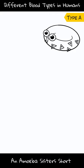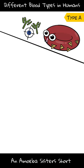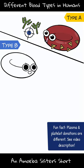Type A has A antigens on red blood cells. In the plasma, they have antibodies — proteins that are part of the immune system — that target the blood antigens they don't have. Therefore, type A blood has B antibodies. Because of that, type A cannot receive type B or AB blood.